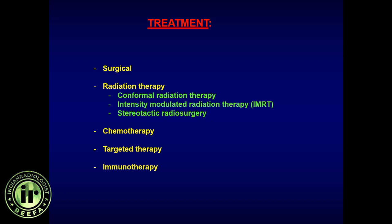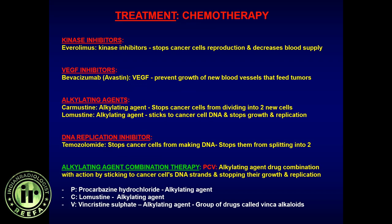Surgery follows the general principle: if you see something abnormal, take it out; if you can't, reduce it. In brain tumor surgery, the critical difference is ensuring that eloquent areas and important white matter tracts are not affected. Several tests are done before and during surgery to confirm this.